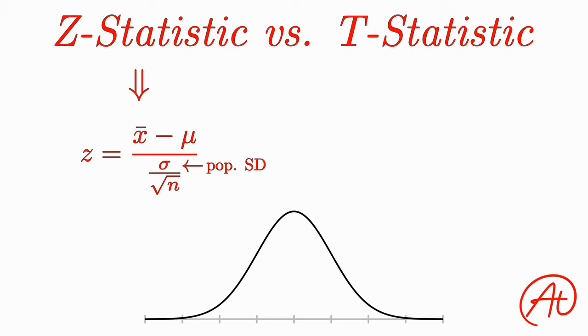So what can we do instead? Well, instead of using the population standard deviation, we can replace that with the standard deviation of our smaller sample. And that, ladies and gentlemen, is how you calculate a t-statistic.